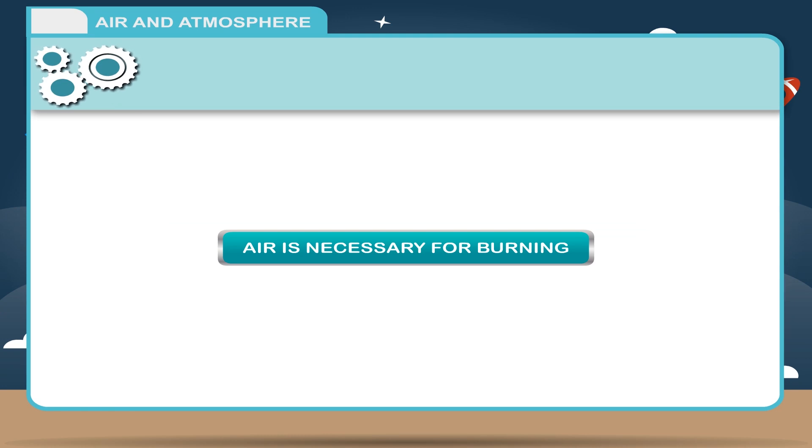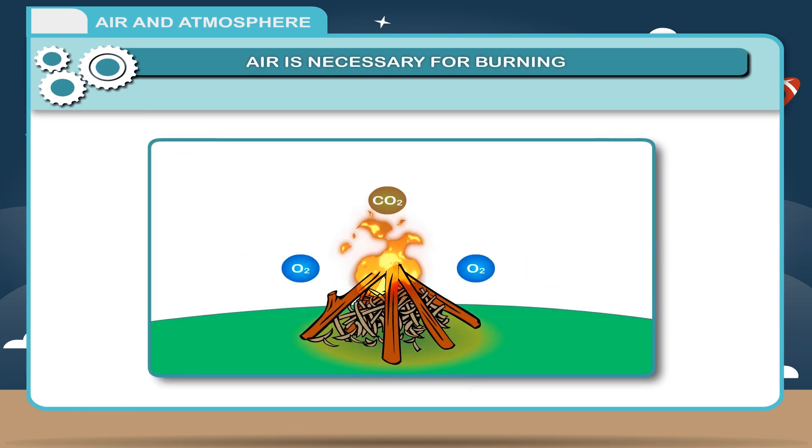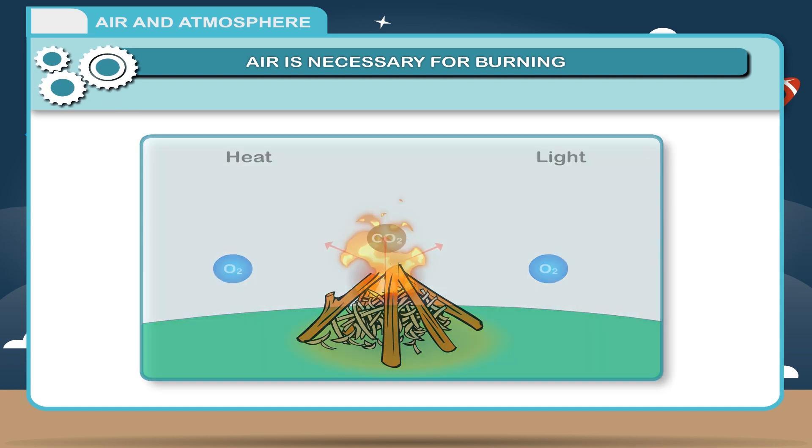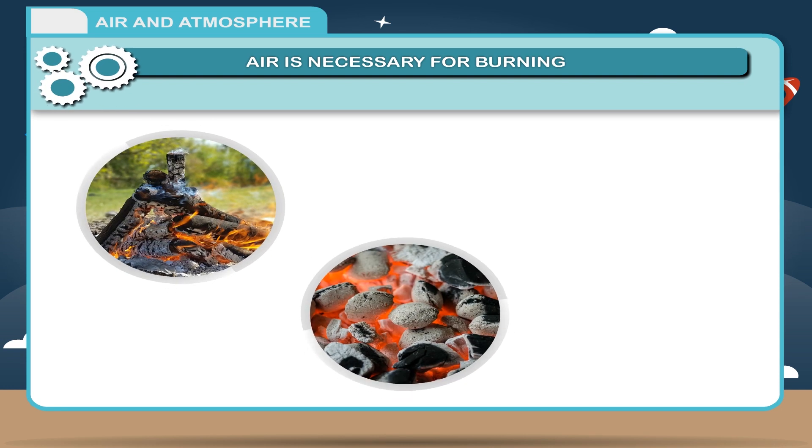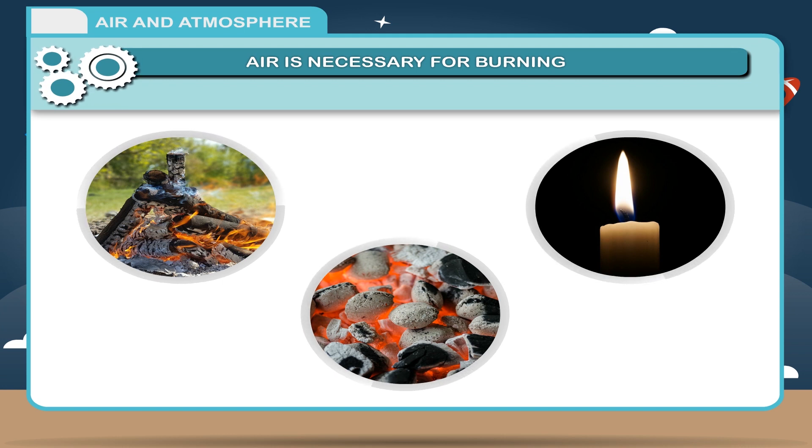Air is necessary for burning. Burning or combustion is a chemical change in which oxygen combines and energy releases in the form of heat and light. When we burn wood, coal, candle or anything, it releases heat and energy.